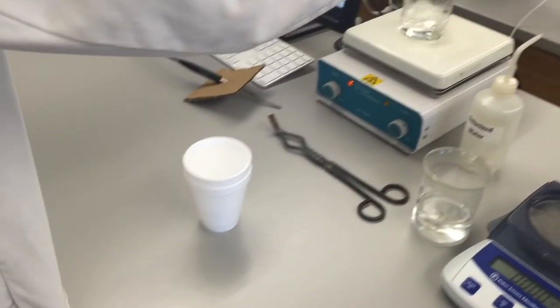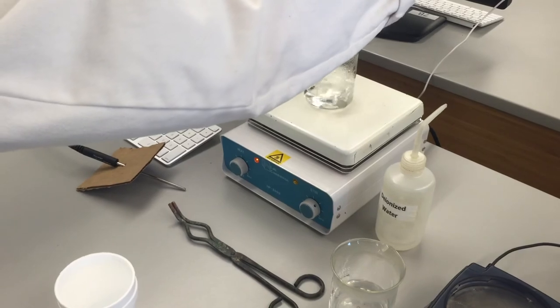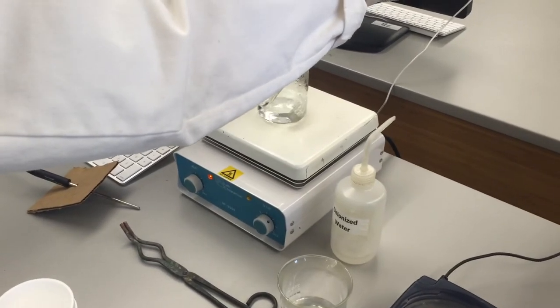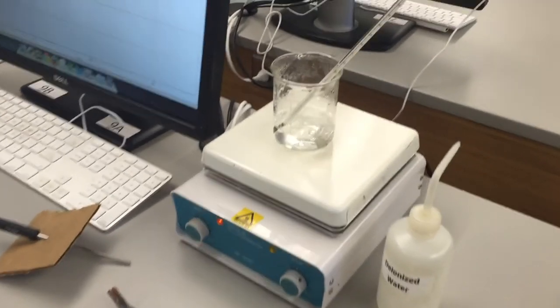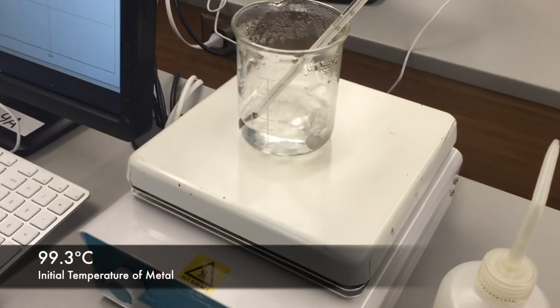Next, take your alcohol thermometer and measure the temperature of your boiling water. You cannot assume it will be 100 degrees exactly. Don't leave it in throughout the experiment. It's easy to hit the thermometer and spill the entire beaker onto your bench.